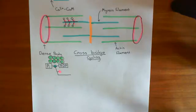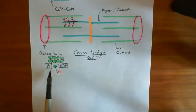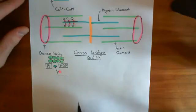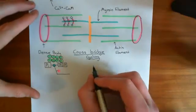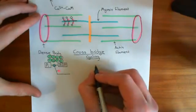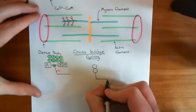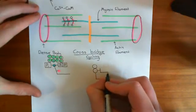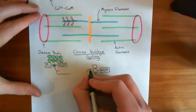Continuing on with cross-bridge cycling. The first thing which happens is that the myosin head is going to drop the phosphate group. That phosphate group is going to come off, and instead it's going to form a bond with one of these actin monomers. It's now formed a bond with this actin monomer, and that bond is known as a cross-bridge — that's why the entire process is called cross-bridge cycling. Forming the cross-bridge is the first step.